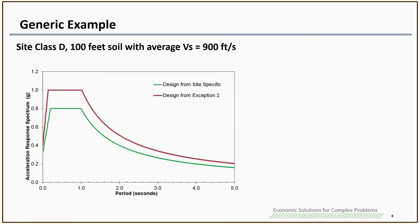This slide shows you a generic example: if you have site class D with 100 feet of soil and an average shear velocity of 900 feet per second. If you don't do the site-specific response analysis but rely on the exception, the dark red line will be the response spectrum. If you do the site-specific response analysis following Chapter 21, you will get the green line as your response spectrum. There is about a 20% load reduction for every period.